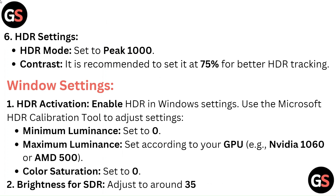HDR Settings: Set HDR Mode to Peak 1000. For Contrast, it is recommended to set it at 75% for better HDR tracking.